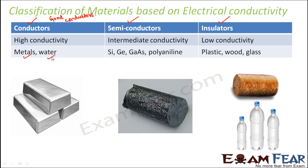At the extreme other end of conductivity are the insulators, which have very low conductivity. In many cases they do not allow electricity to pass through them at all, which is why they are also known as poor conductors. Examples include plastic, wood, and glass — they do not allow electric current to pass through them.